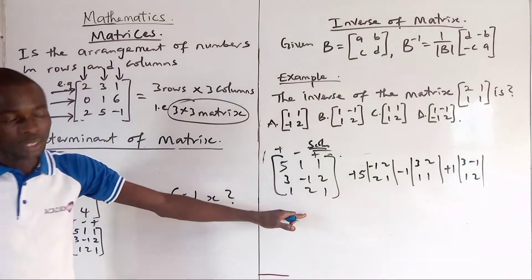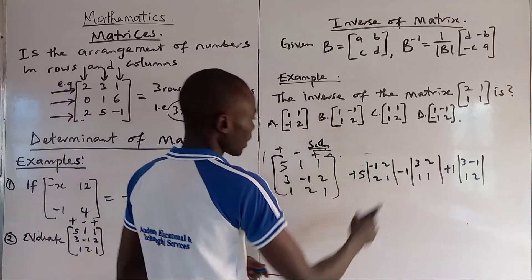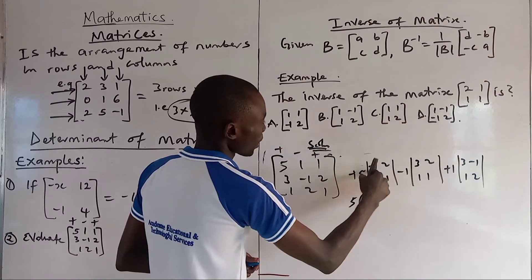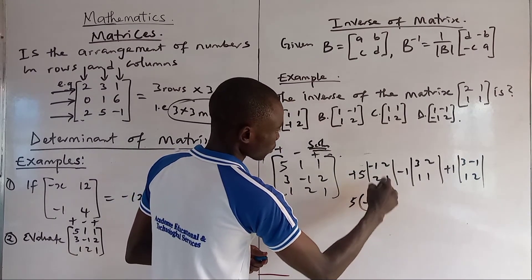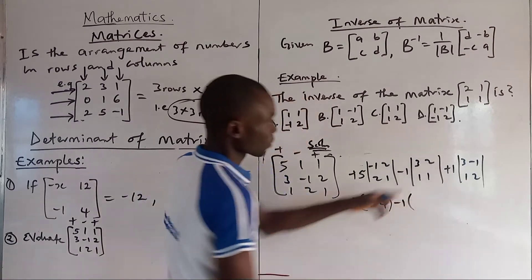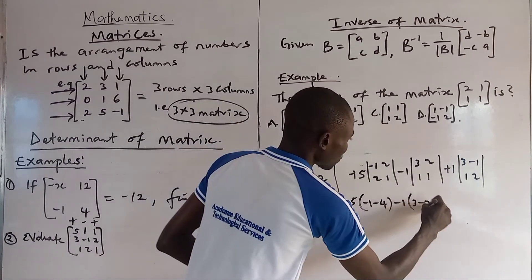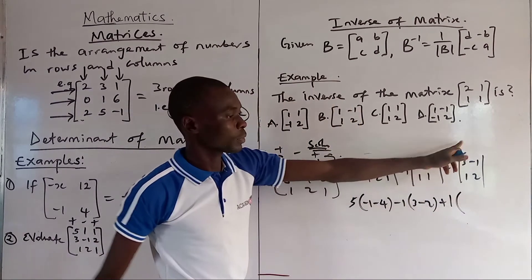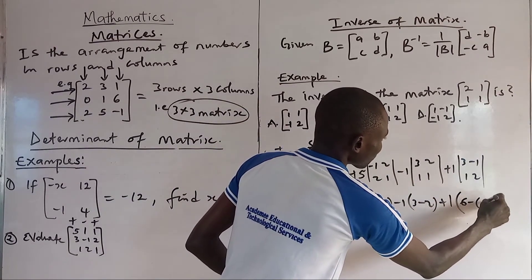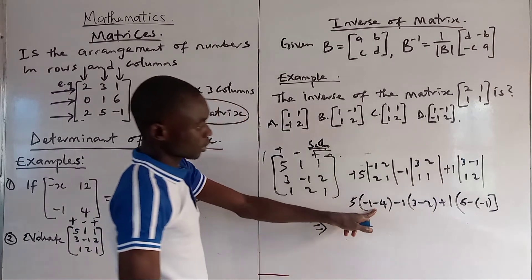Then you apply the determinants to them. This becomes 5 into minus 1 times 1 is minus 1, minus 2 times 2 is 4. Minus 1 now. 3 times 1 is 3, minus 2 times 1 is 2. Plus 1 now, 3 times 2 is 6, minus 1.